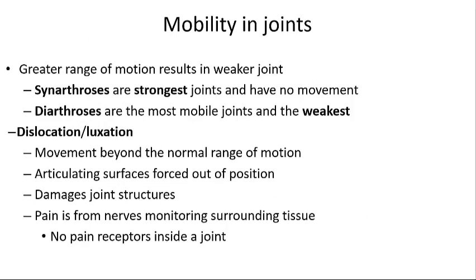Our joints provide for mobility, but as range of motion increases, structural integrity decreases. Synarthrotic joints are the strongest because they have no movement. Diarthrotic joints are the most mobile and generally the weakest. One type of joint injury is a dislocation, also known as luxation — this is when a reinforcing structure cannot protect a joint from extreme stress, extreme ranges of motion, or force applied to it, causing articulating surfaces to be forced out of position.